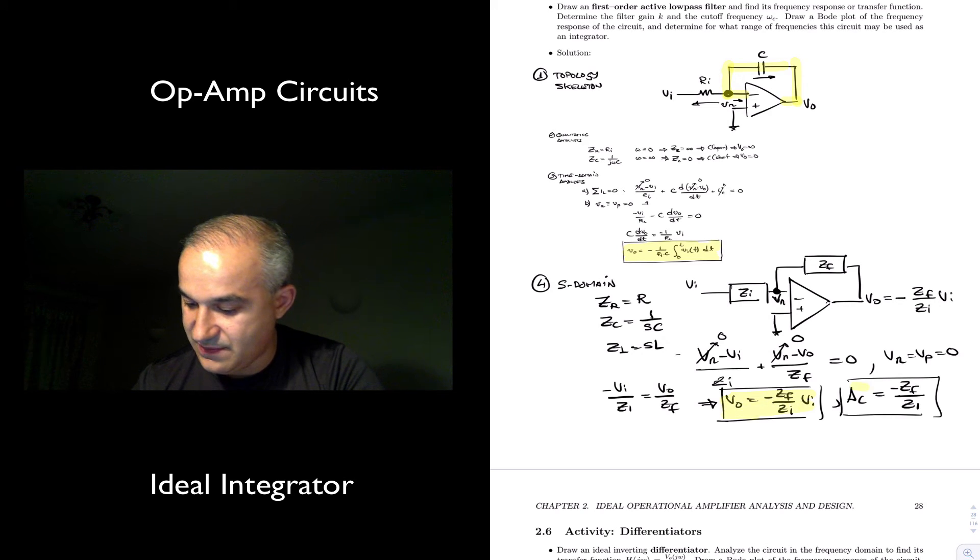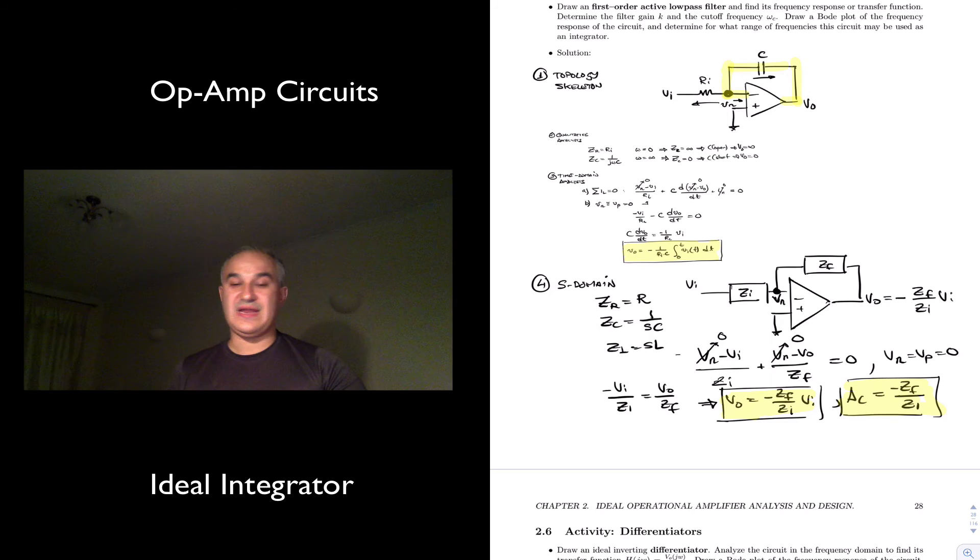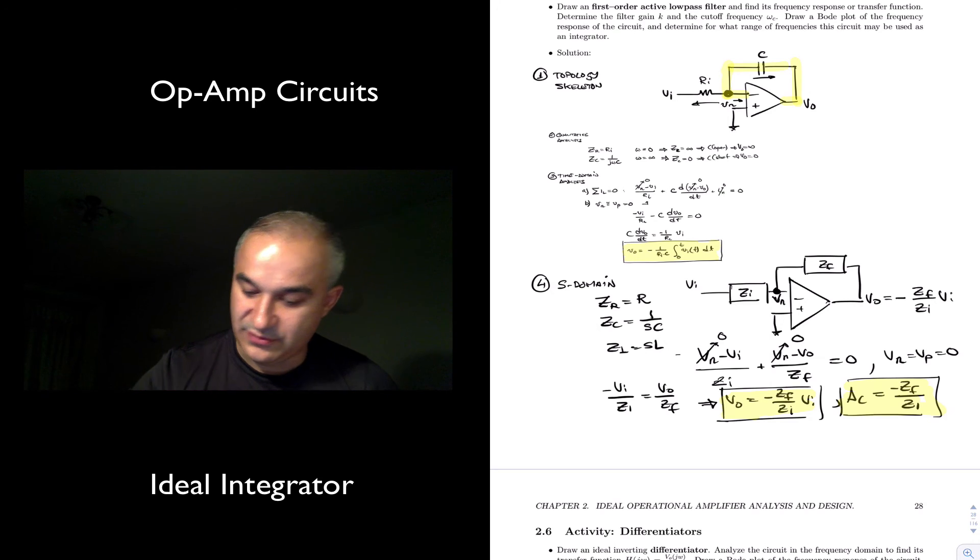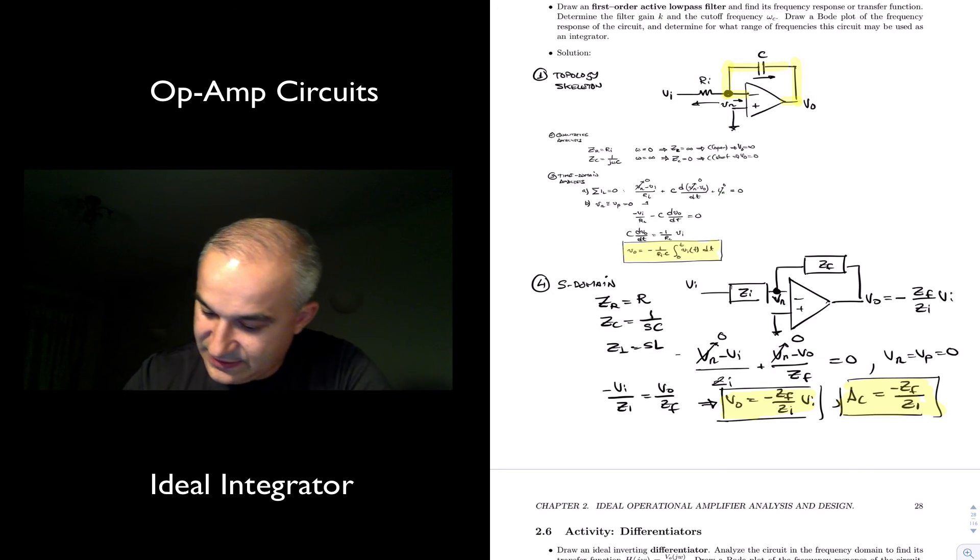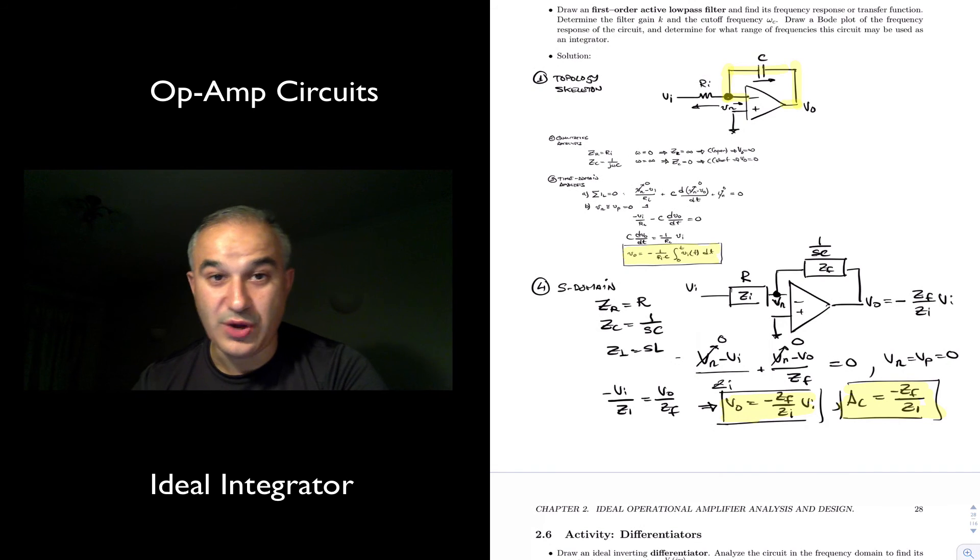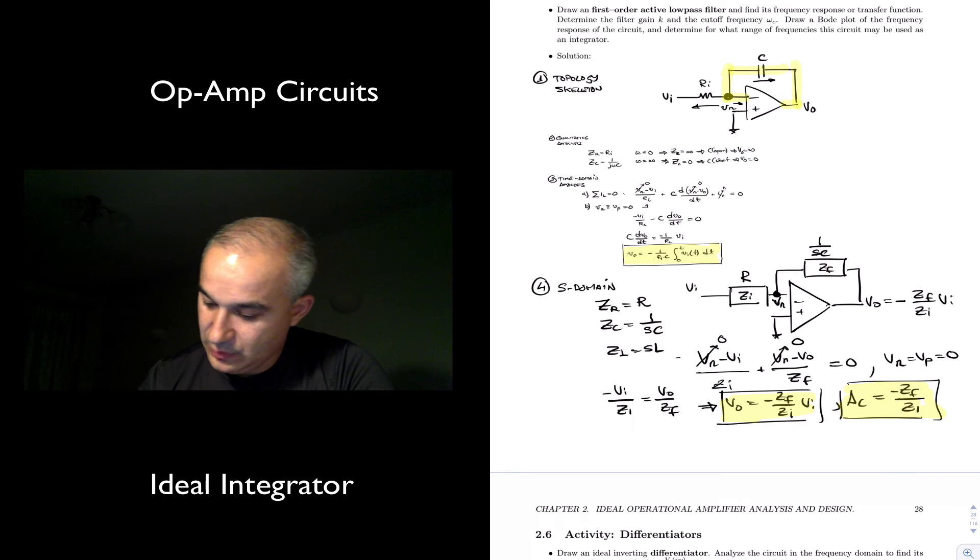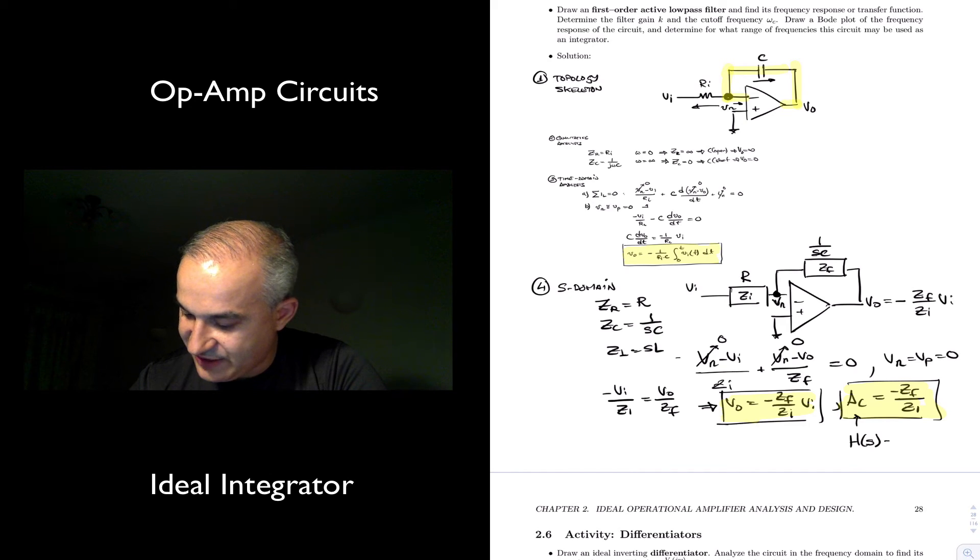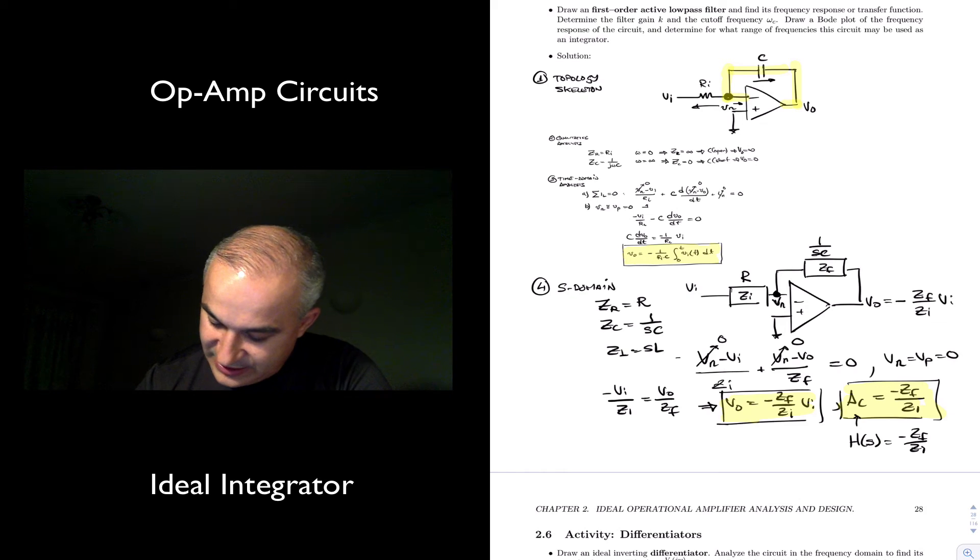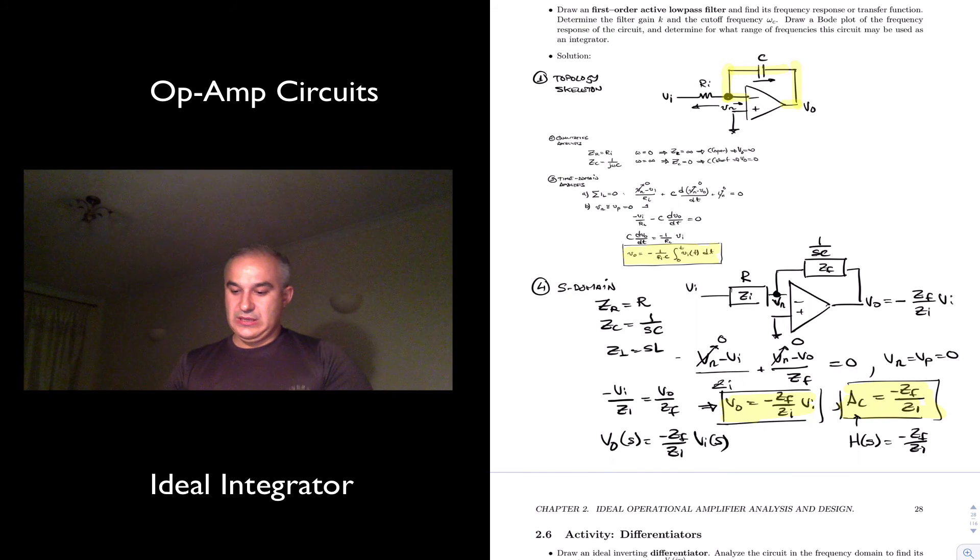So, S domain, you can have any impedance. Let's go ahead and do the analysis. You have to use capitals when I'm working in the S domain or in the frequency domain. Vn minus Vi over Zi plus Vn minus Vout over Zf plus zero, this other current, is equal to zero. And so, what we have here also is that Vn is equal to Vp is equal to zero, which enables me to cancel that and that. And what I get is minus Vin over Zin is equal to Voutput over Zf. Or the output is equal to minus Zf over Zin times the input, which means that the gain is minus Zf over Zi for any inverting topology independently of those impedances.